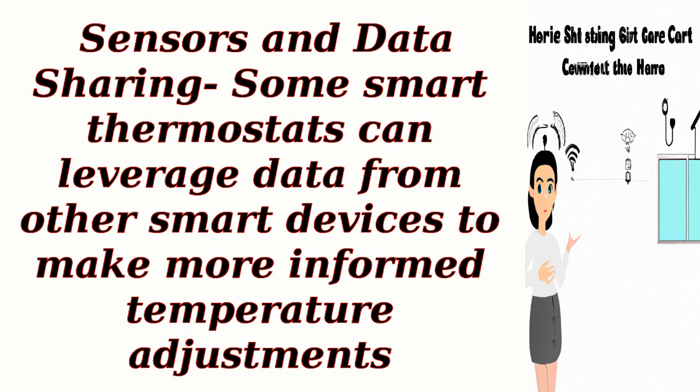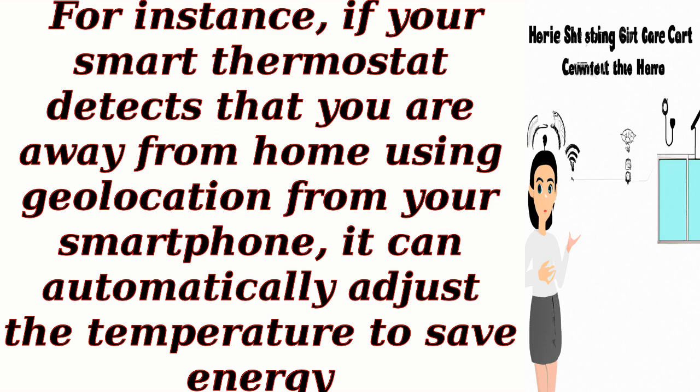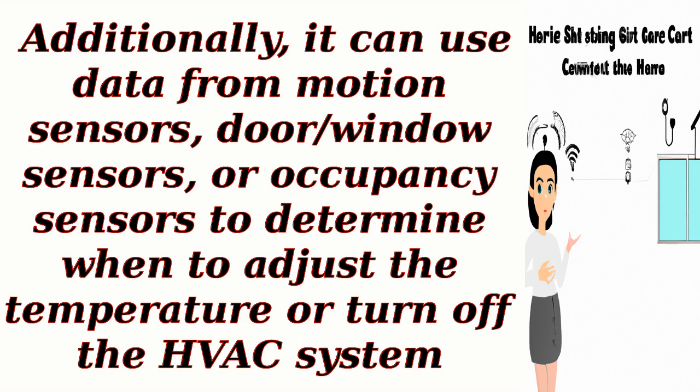Sensors and data sharing: some smart thermostats can leverage data from other smart devices to make more informed temperature adjustments. For instance, if your smart thermostat detects that you are away from home using geolocation from your smartphone, it can automatically adjust the temperature to save energy. Additionally, it can use data from motion sensors, door/window sensors, or occupancy sensors to determine when to adjust the temperature or turn off the HVAC system.